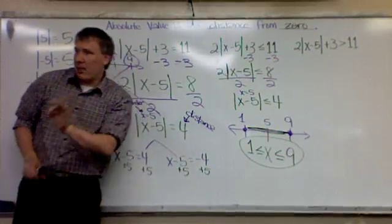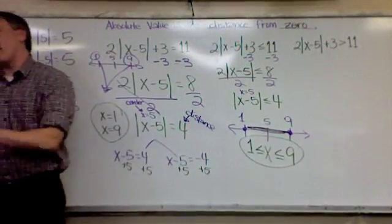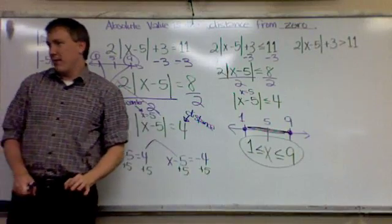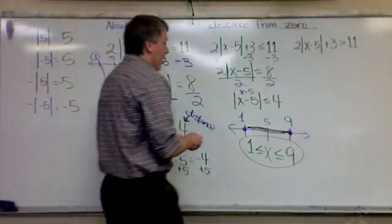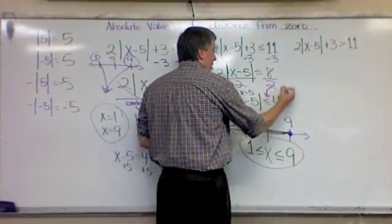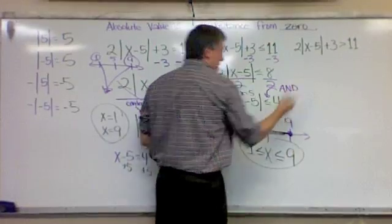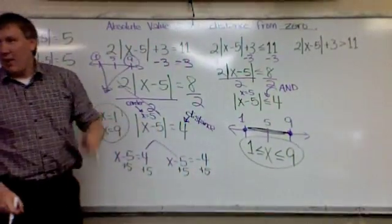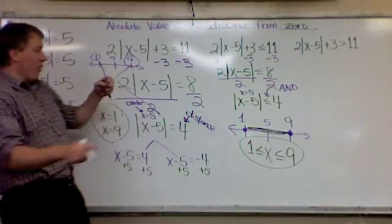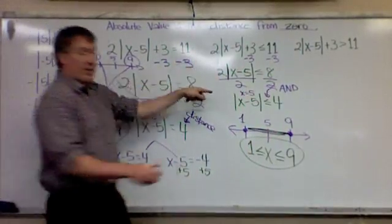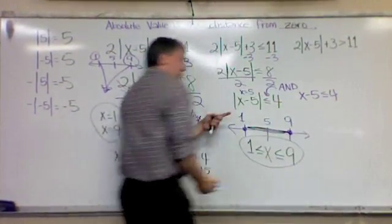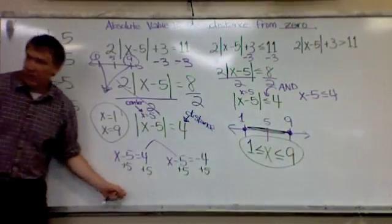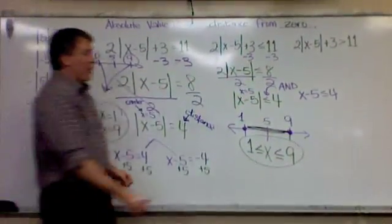Now, here's the step-by-step way, and I guarantee you it's not simpler. The step-by-step way, you have to remember that when you have less than, this is an and statement. That's key. And then you write it twice. Just like you wrote this twice, you write that twice.